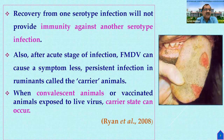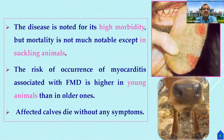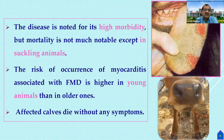Carrier animals propagate the disease to other animals, and when convalescent animals are vaccinated — animals exposed to live virus — carrier state can occur. The disease is noted for very high morbidity but mortality is not so high except in suckling animals. In previous outbreaks in areas like Chikka, Balapur, or Kolar, up to 10% of animals have died. The risk of myocarditis associated with FMD is higher in young animals than older ones.